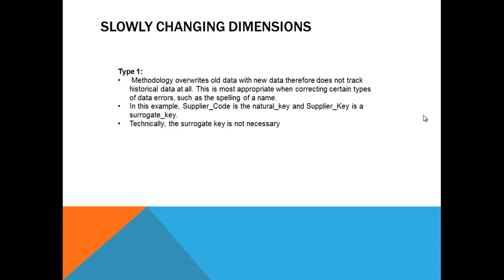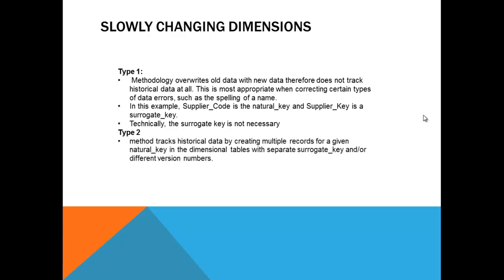Type 2 method tracks historical data by creating multiple records for a given natural key in a dimensional table, with a separate surrogate key and/or different version numbers. For example, someone wants to research a person who kept changing names over the last 20 years — if they want to build a criminal record, they need to identify every name that person has used.